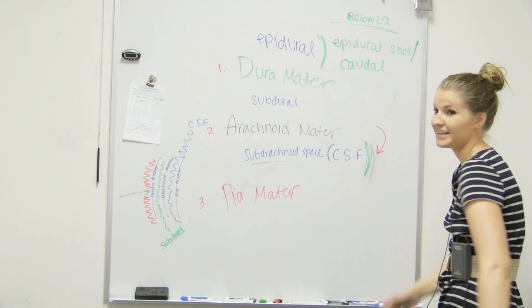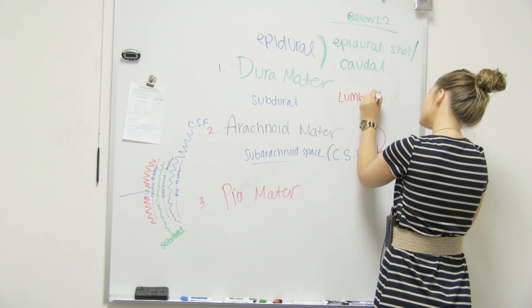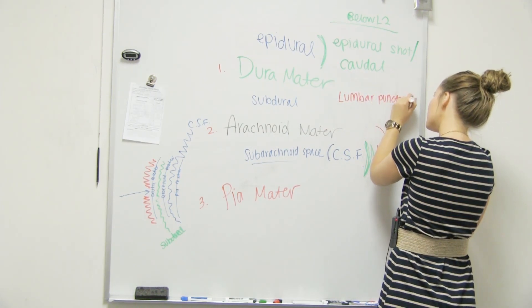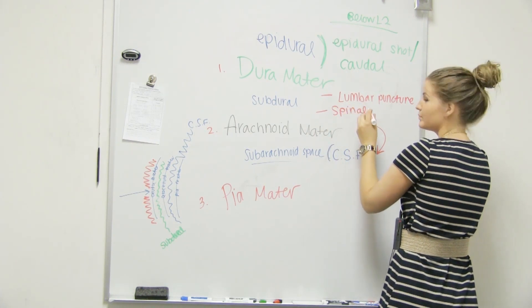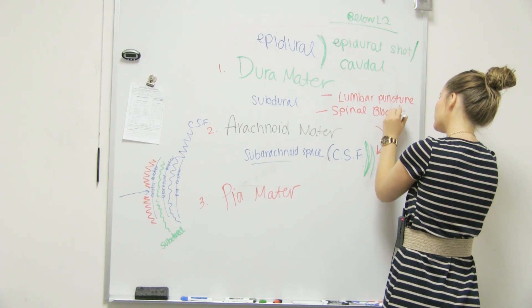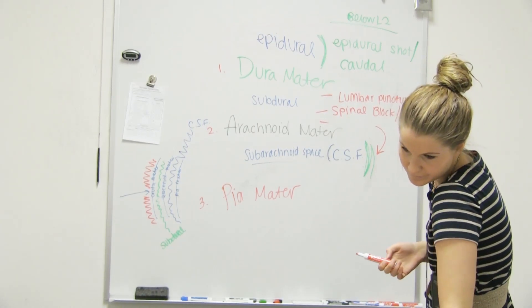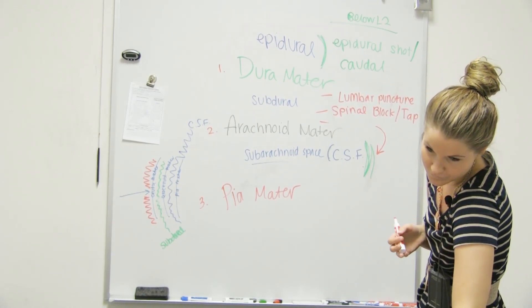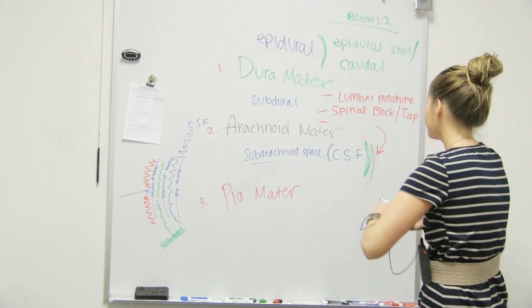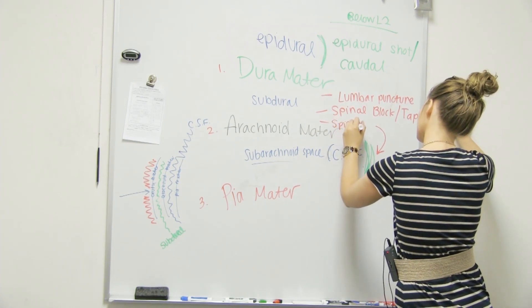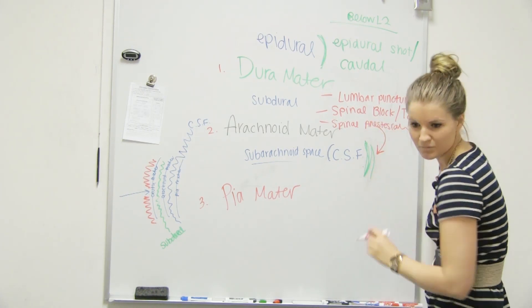And when are we going to inject right here? Lots of stuff. So in the subarachnoid space we can have a lumbar puncture. What else? A spinal block or tap. Spinal anesthesia.